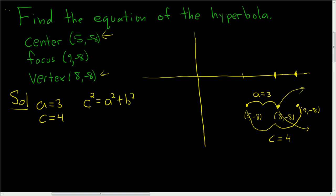So c is 4, so c squared is 16. And then a is 3, so a squared is 9 plus b squared. If you subtract 9 from both sides, you get 7 equals b squared.